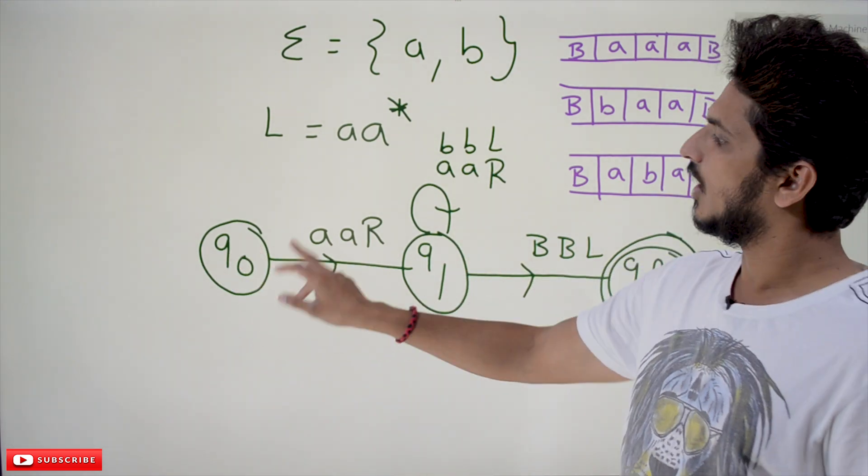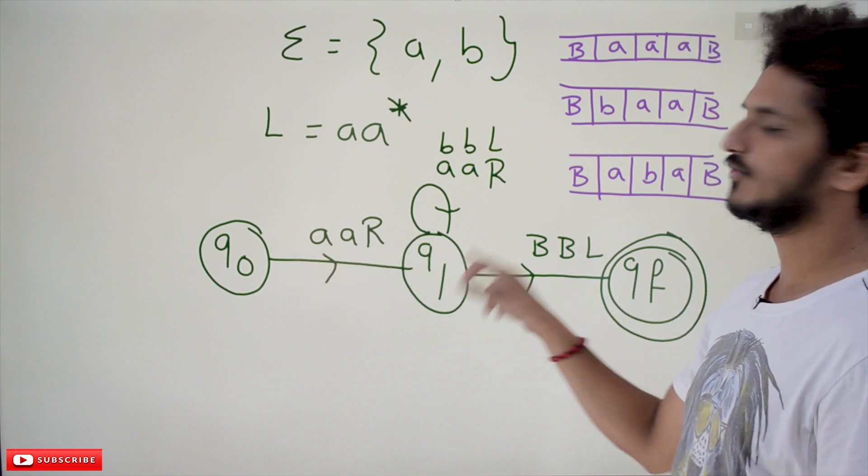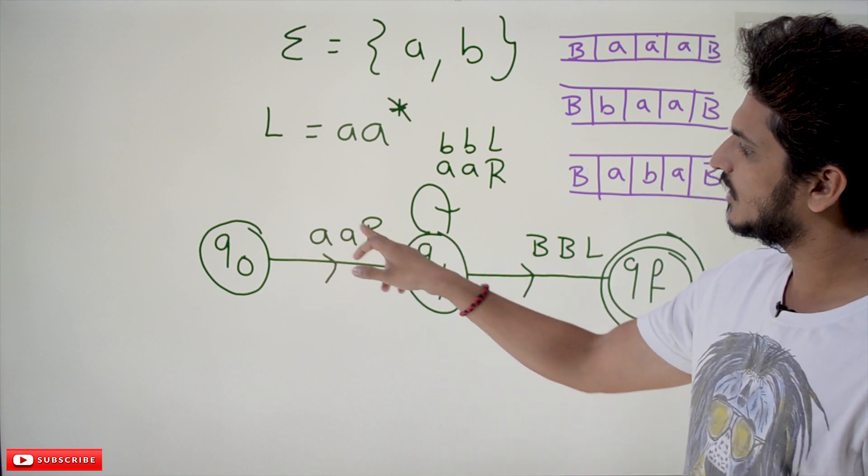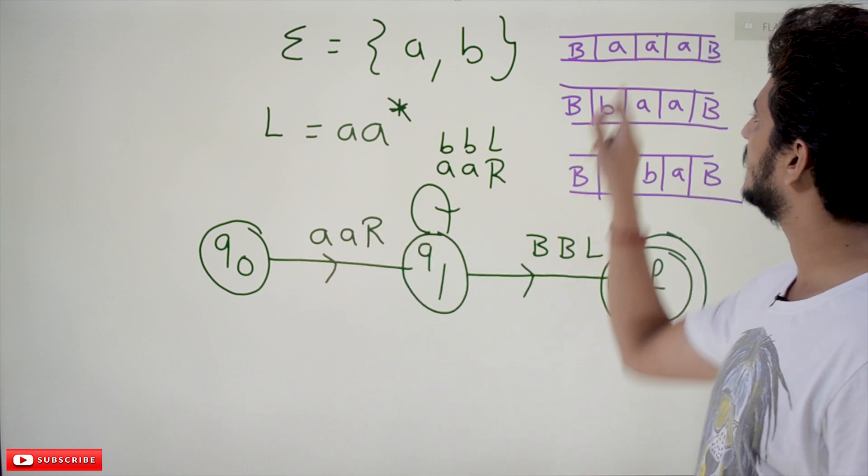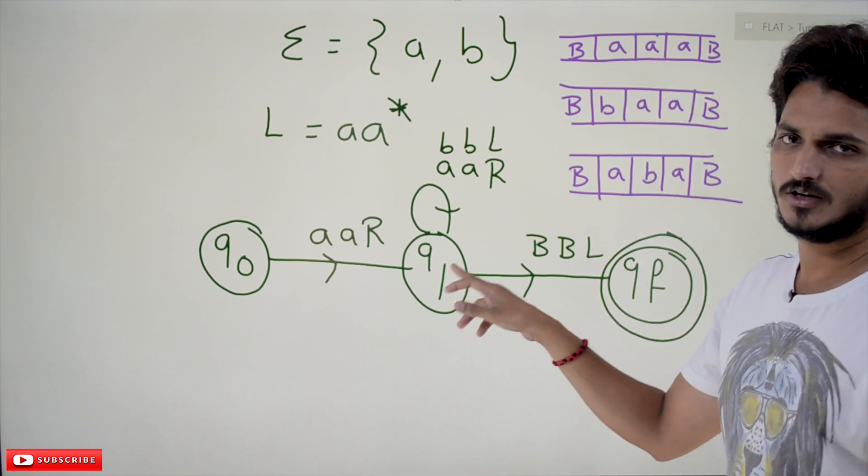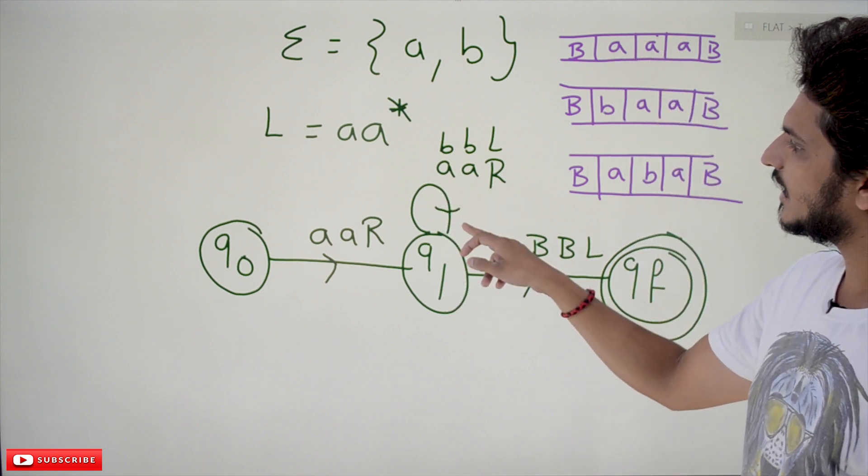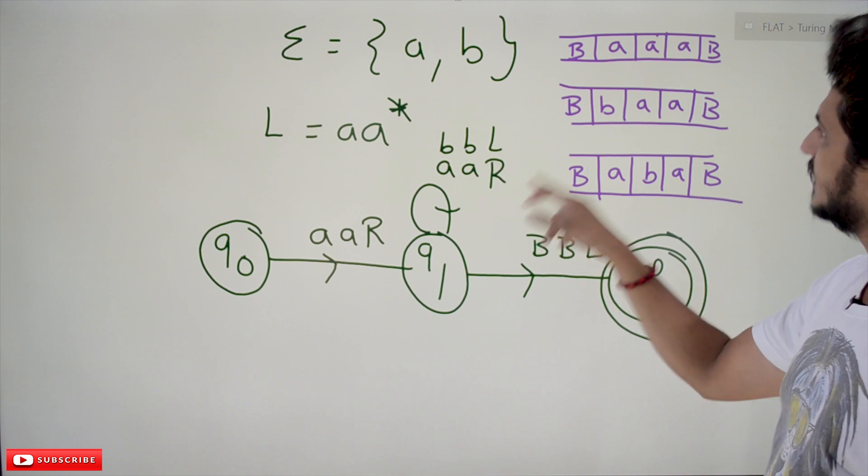Let's see what happens on this logic. We start from Q0. On Q0, at least you have to find one A. That's why if you found A, we are keeping it as A and move right side. Now on Q1, if you found A, keep it as A, move right side.